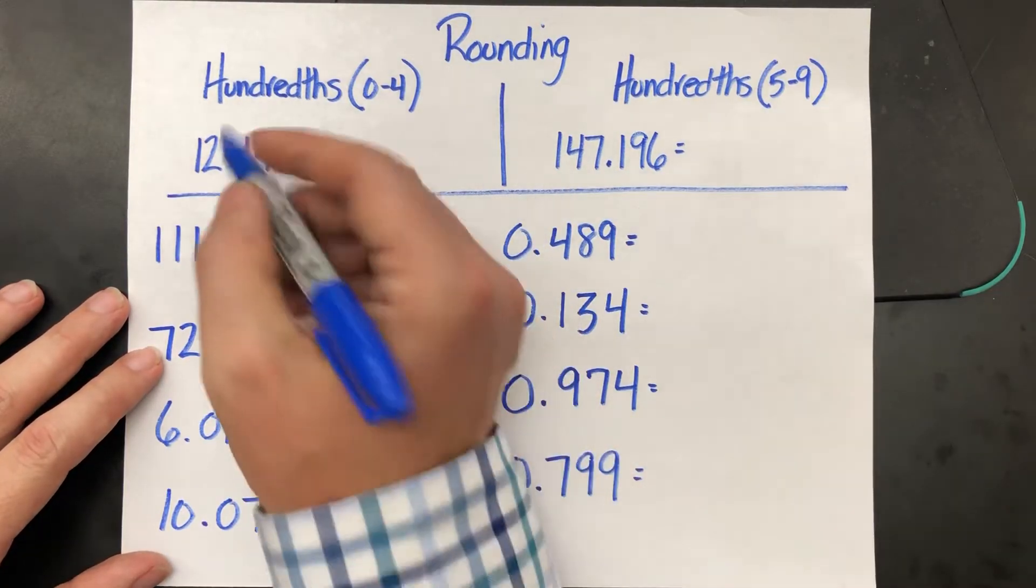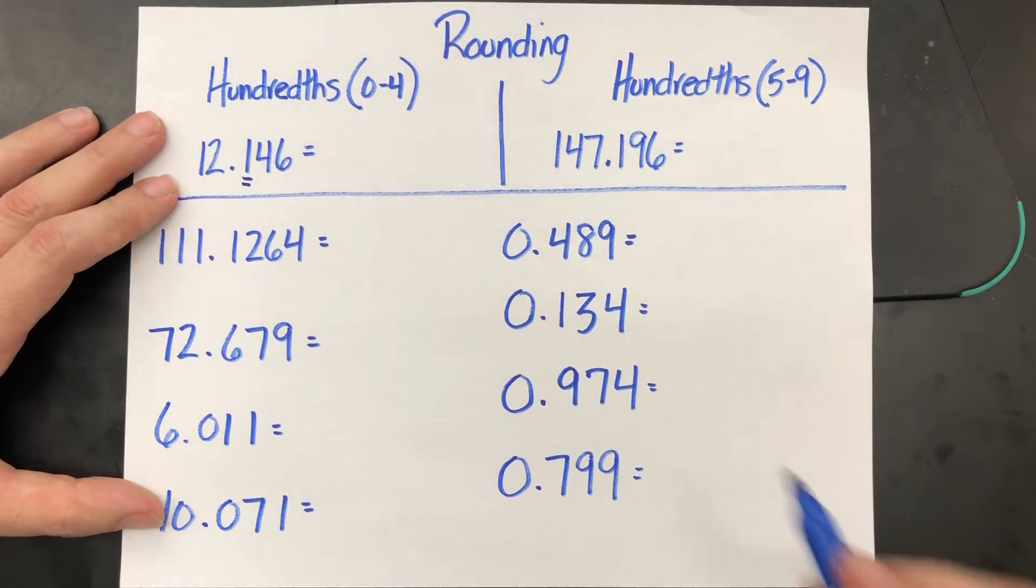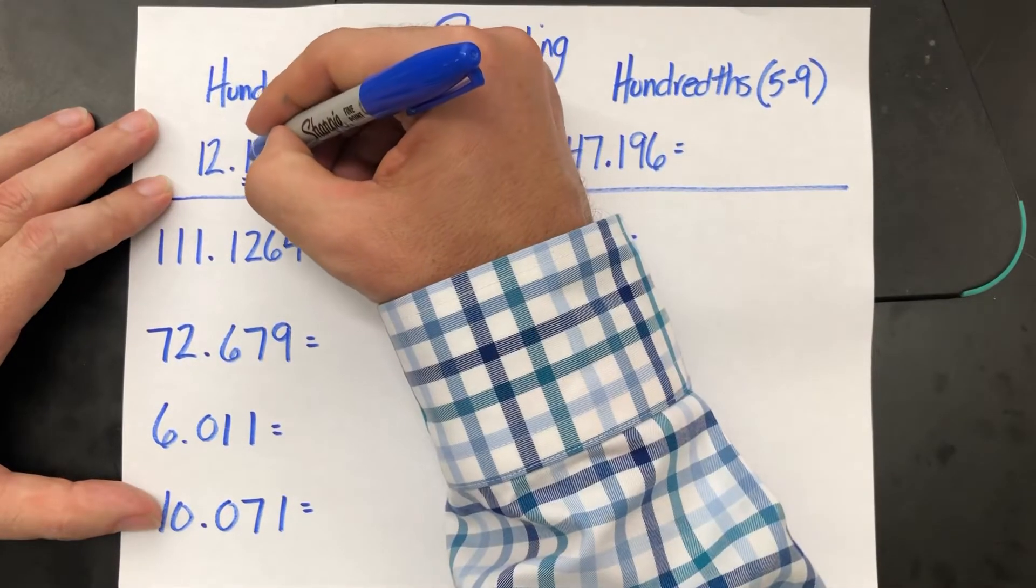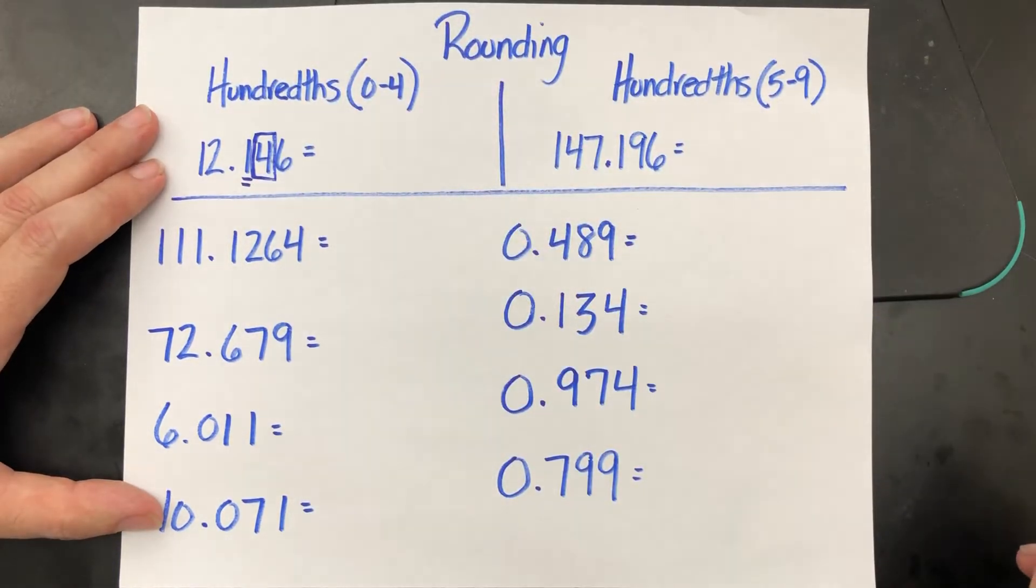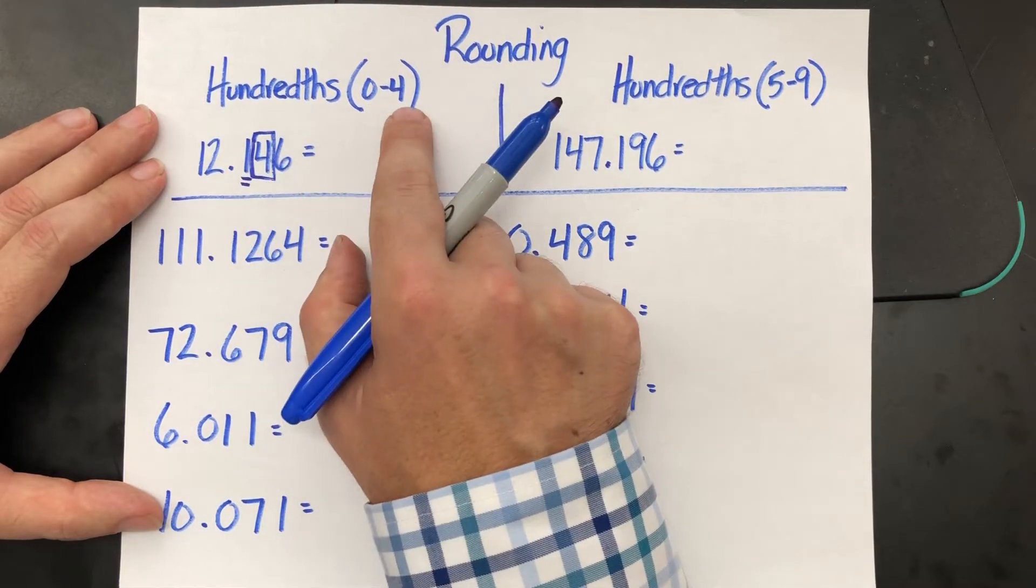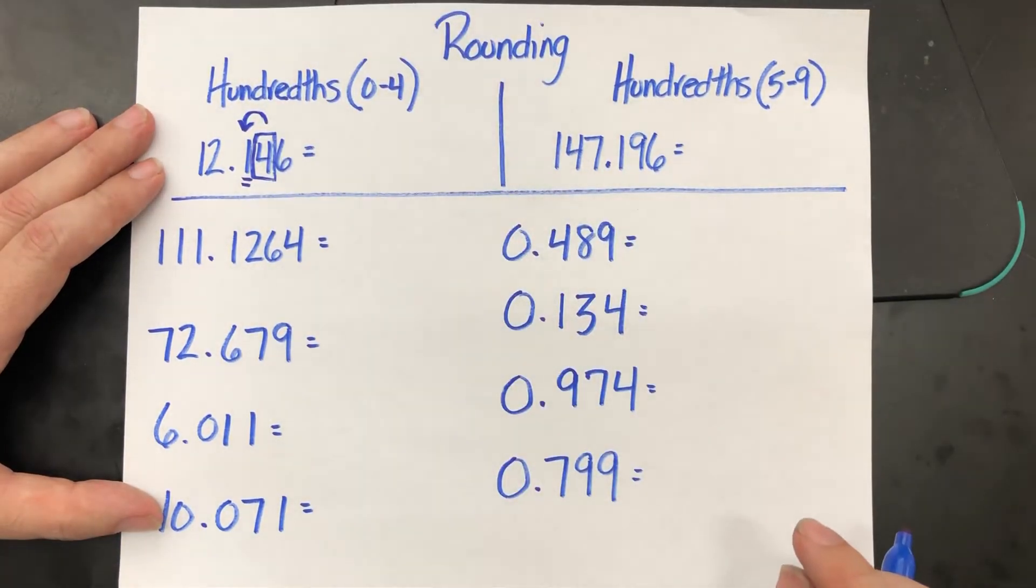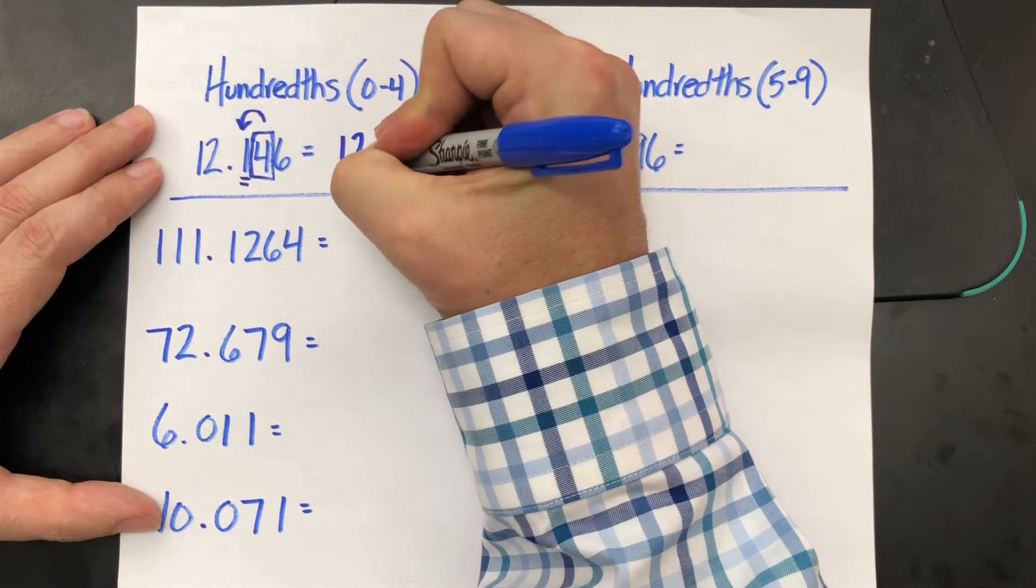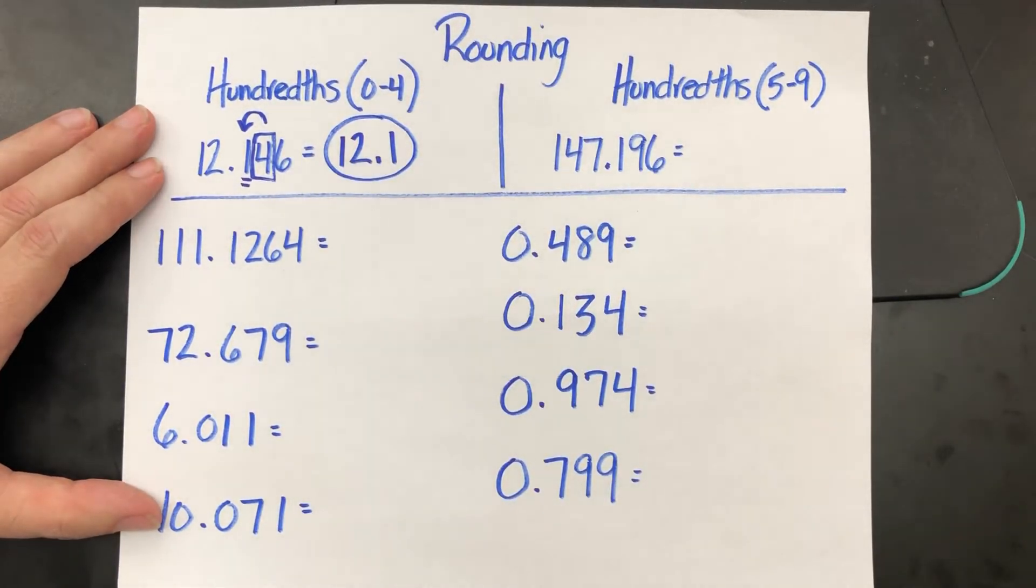The tenths place is one decimal place to the right of the decimal point, but the number in the second spot is going to influence what that value looks like. The second spot is called the hundredths. If your hundredth spot is between zero and four, it will not influence the tenth spot. You can leave the tenths value exactly as is. Twelve point one four six will stay exactly as twelve point one rounded properly to the tenths.